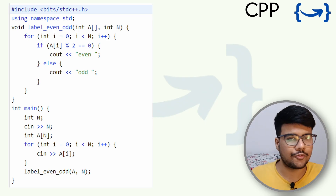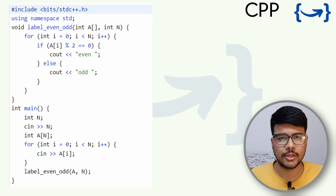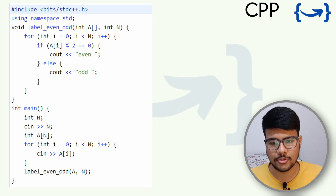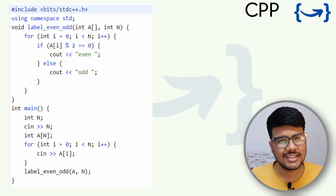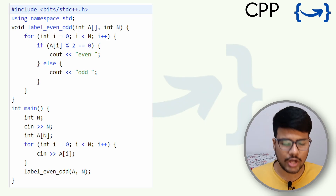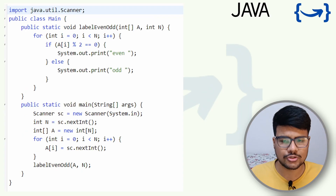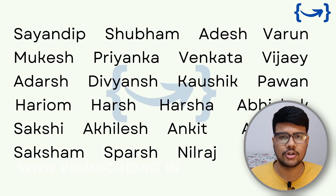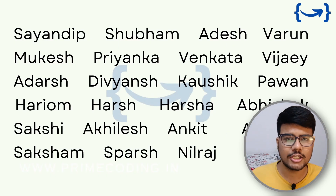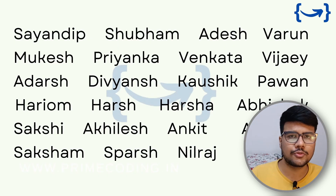C++, Java, and Python code can all be found in the description via the GitHub link. These questions are very easy so we won't spend much more time on them.